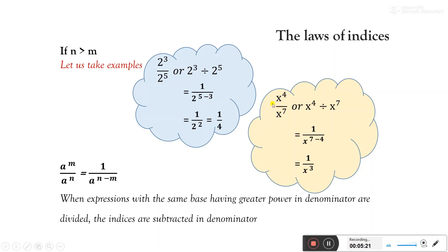Similarly, x to the power 4 divided by x to the power 7: we have the common base x. In division, we subtract powers. But here the denominator power is greater, so we subtract in the denominator to get a positive power: 1 over x to the power 7 minus 4, equals 1 over x cubed. When expressions with the same base are divided and the denominator has the greater power, the indices are subtracted in the denominator.